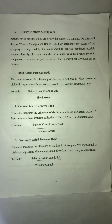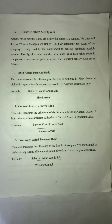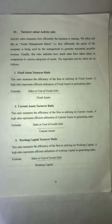Next, we have the Current Asset Turnover Ratio. This is the relationship between Sales and Cost of Goods and Current Assets. The formula is: Cost of Goods and Sales divided by Current Assets. Next is the Working Capital Ratio.